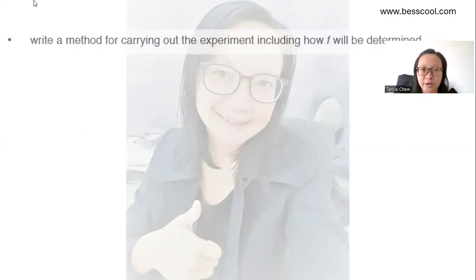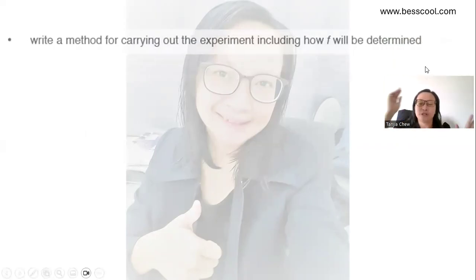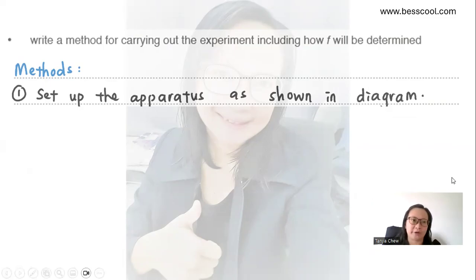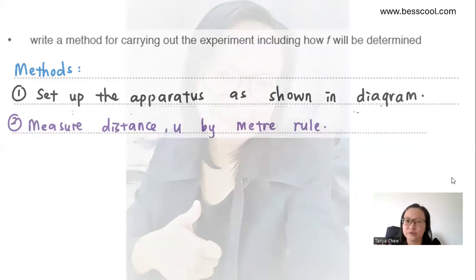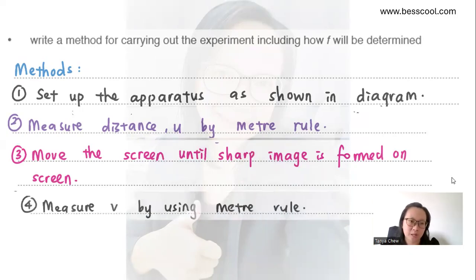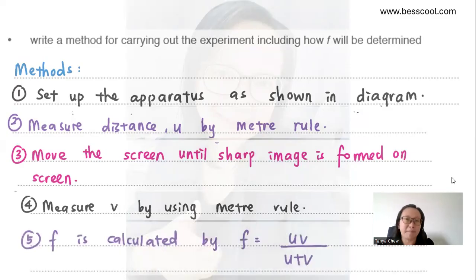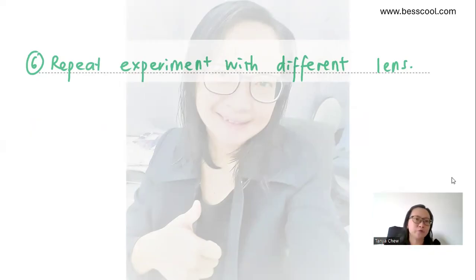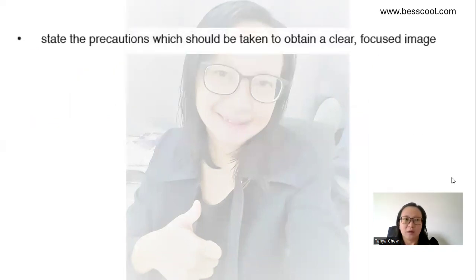After that, write a method for carrying out the experiment, including how F would be determined. So methods: first of all, whenever I draw a diagram, I will want the examiner to refer to my diagram. So I say set up the apparatus as shown in my diagram. And after that, I measure the distance U. How do I measure? By using a meter rule. And after that, I have to move the screen back and forth, back and forth until a sharp image is formed on the screen. And then, I measure the V by using the same meter rule. And F can be calculated by using the equation. And after that, in physics, we don't just conduct the experiment for once. We have to repeat the experiment with different lens.